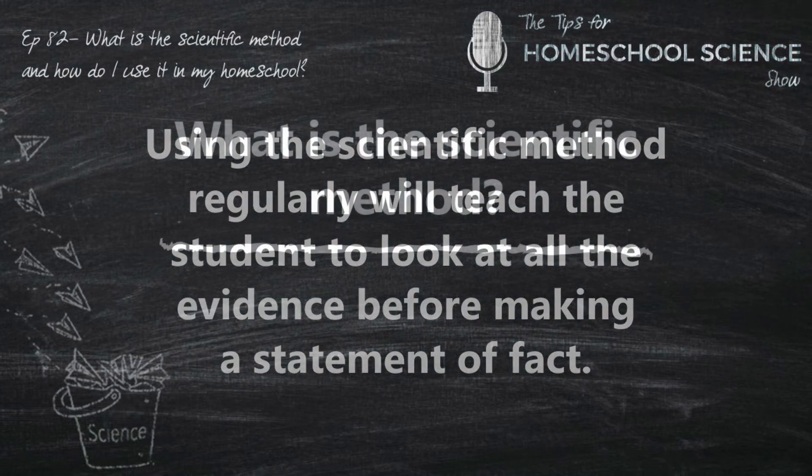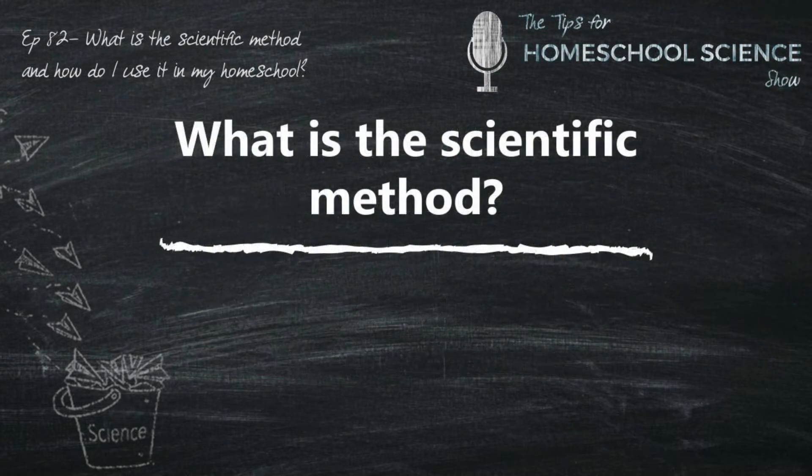First, what is the scientific method? In a nutshell, the scientific method teaches the brain to logically examine and process the information it receives. It requires that one observes and tests before making a statement of fact. It's also the main method that scientists use when asking and answering questions, and a scientist follows these same steps every time he employs the scientific method.